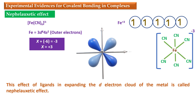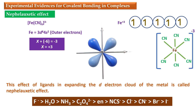Nephelauxetic effect provides an indirect evidence of covalent bonding between the central metal atom and the surrounding ligands. Depending on the ability of ligands to expand the d electron cloud of the metal, they are arranged in a series called the nephelauxetic series. These two experimental evidences prove the presence of covalent bonding between the metal and the surrounding ligands. This covalent bonding between the metal and the ligand can be easily studied by molecular orbital theory. In the next video we will study the application of molecular orbital theory to transition metal complexes.